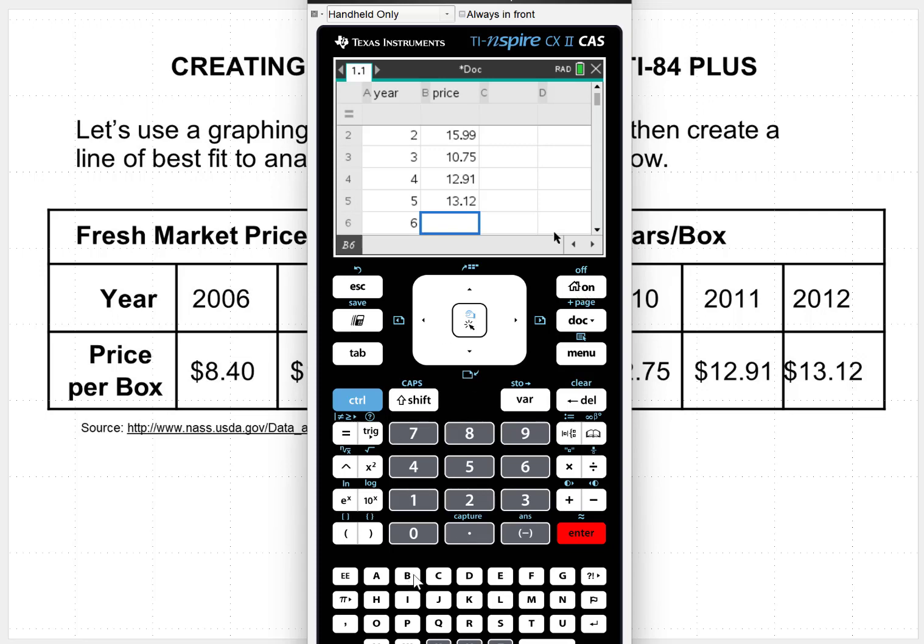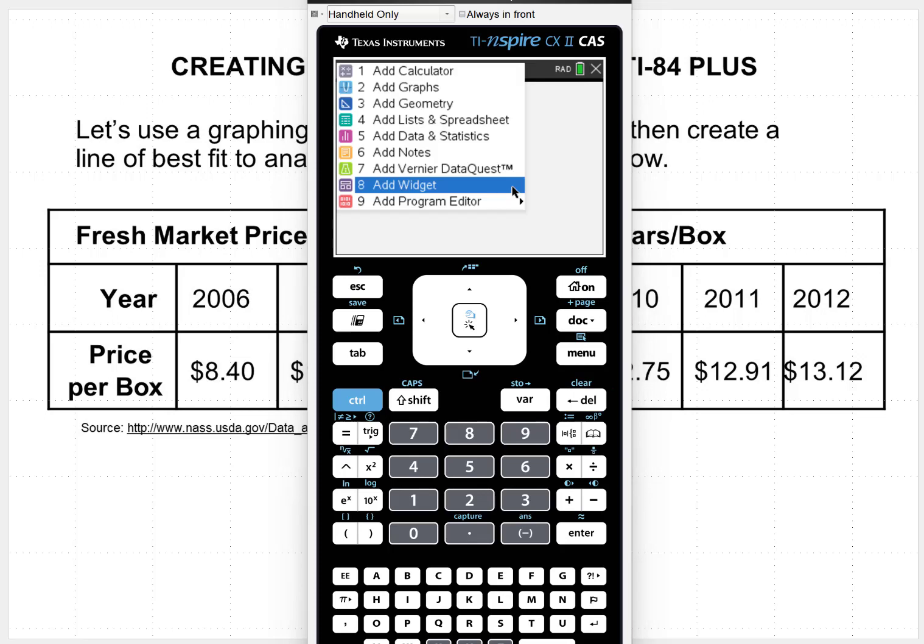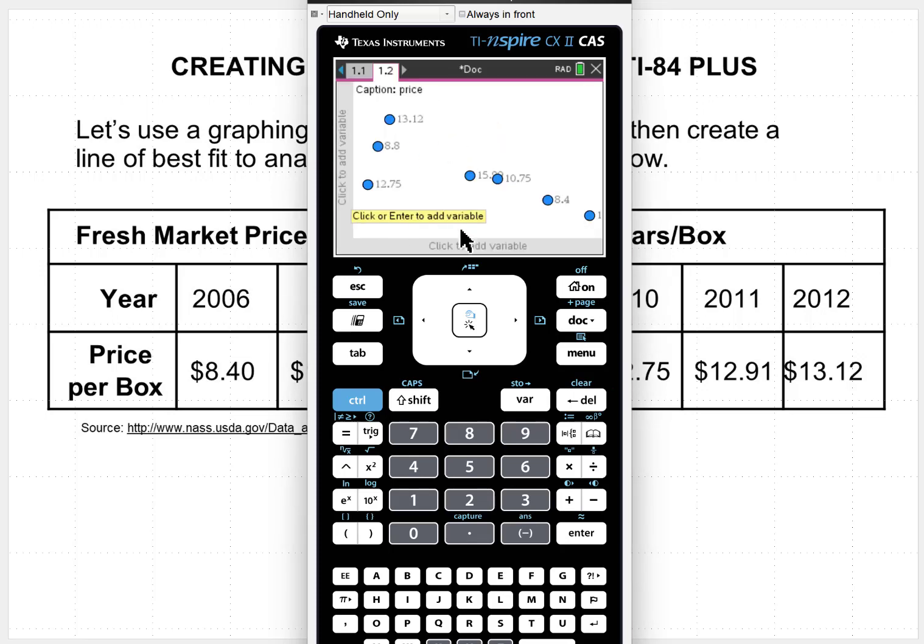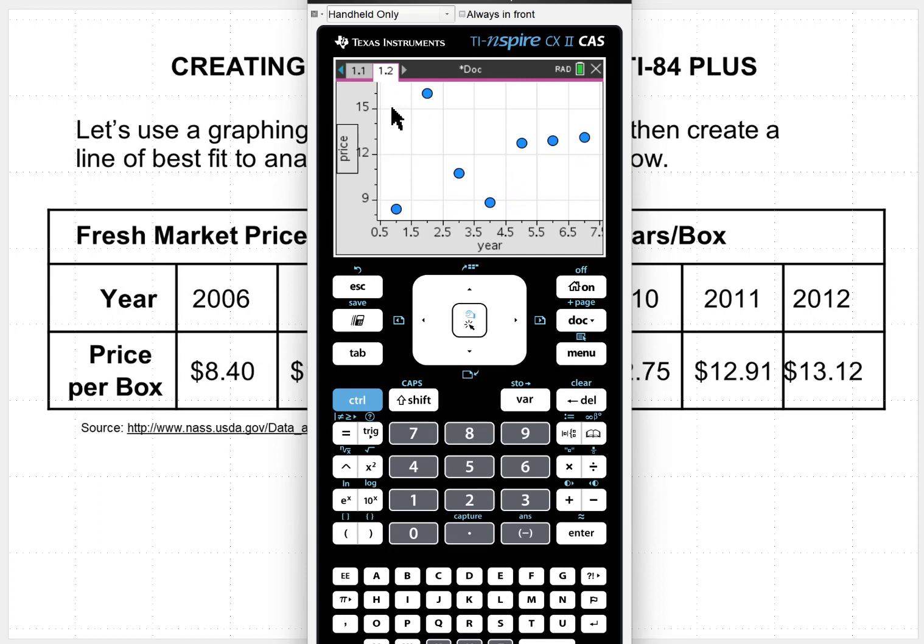Then if you hit ctrl and the letter I, we're going to add data and statistics. Click down here. We want the year to be on the x-axis. And click over in the right column. And we want the price to be on the y-axis. And there we have our scatterplot.